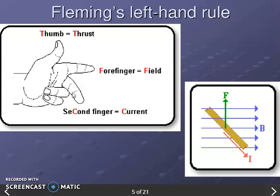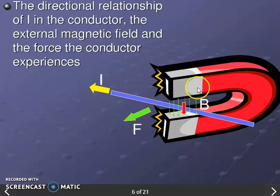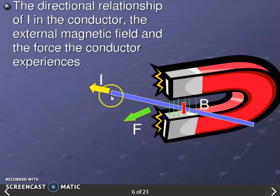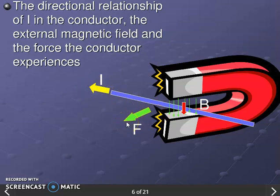We find the direction of force using Fleming's Left Hand Rule. The first finger points in the direction of the magnetic field, and the second finger points in the direction of the current. The thumb then gives us the direction of the force. In the arrangement shown, we have a U-shaped magnet with north-to-south magnetic field represented by B, and a conductor carrying current — we use the left hand rule to determine the force direction.